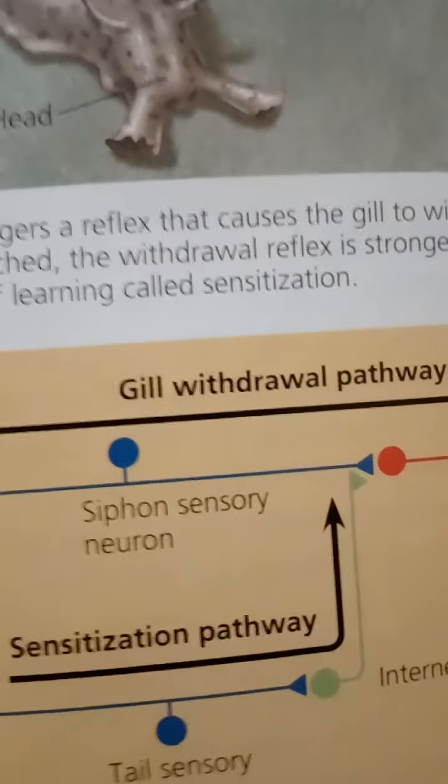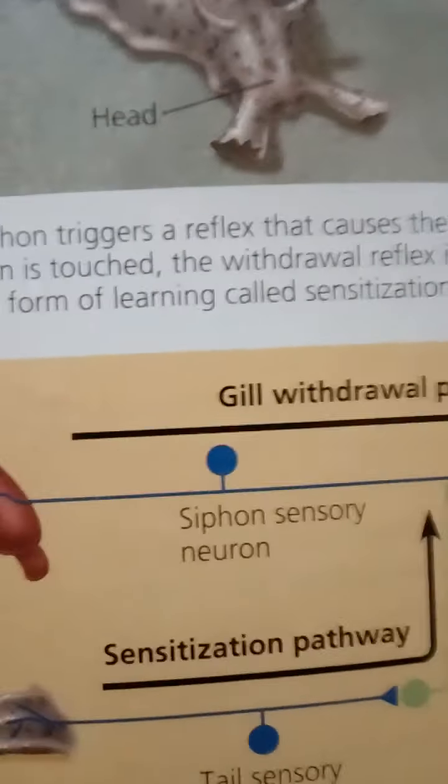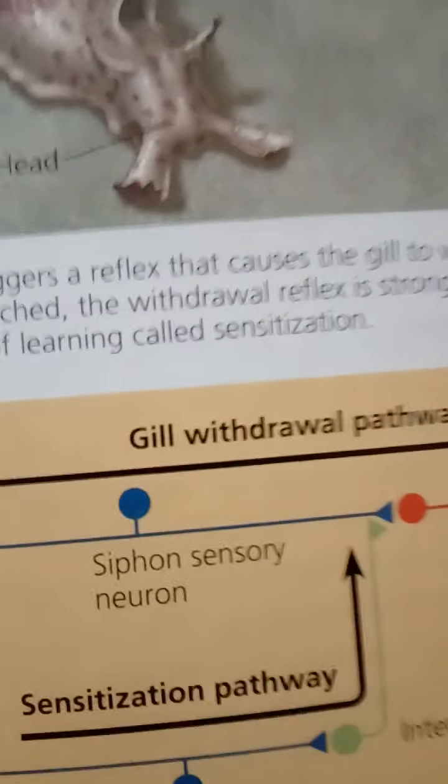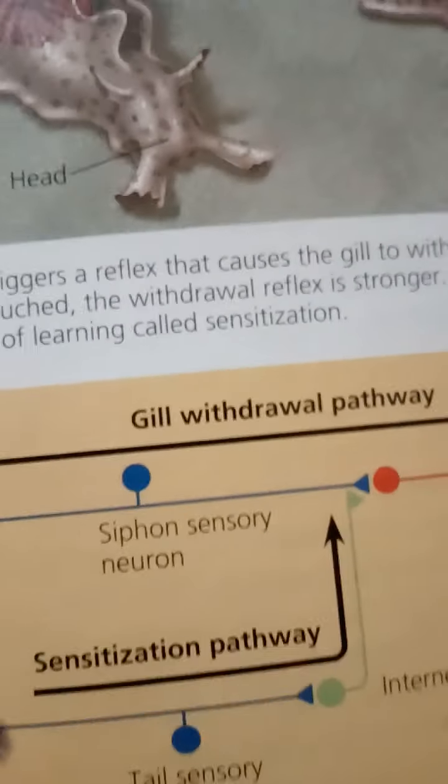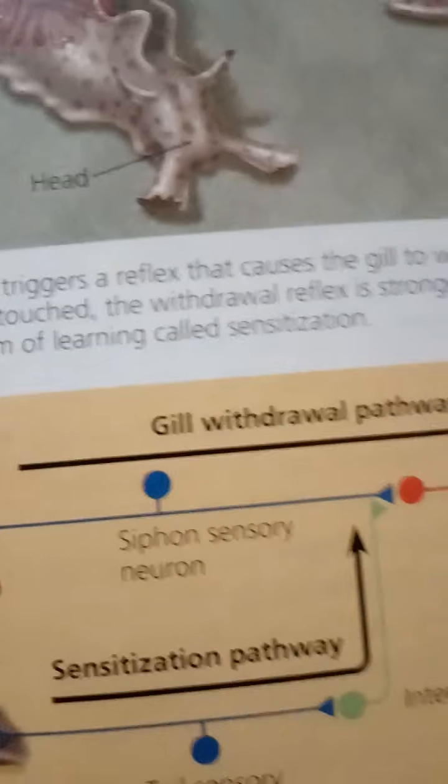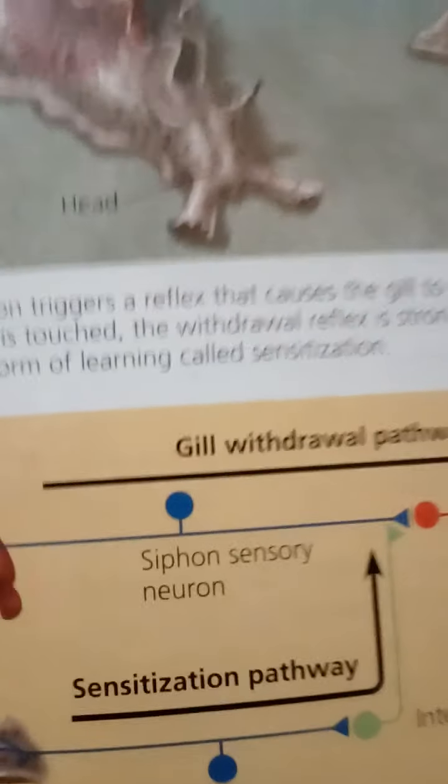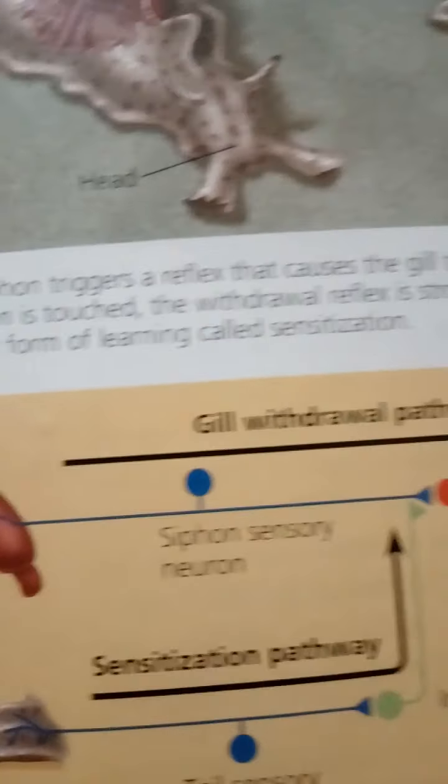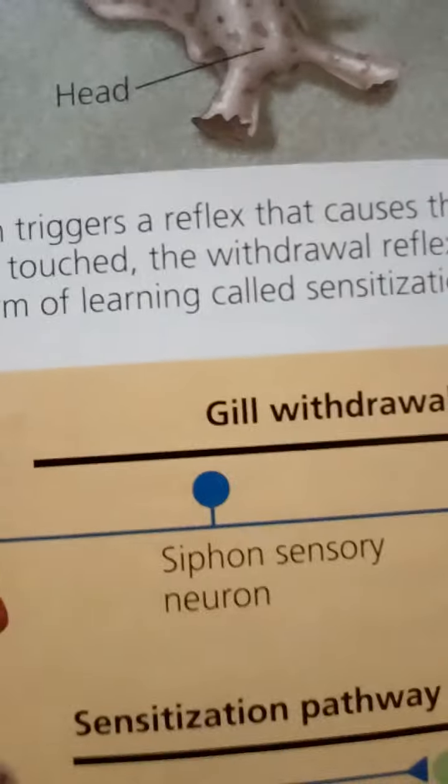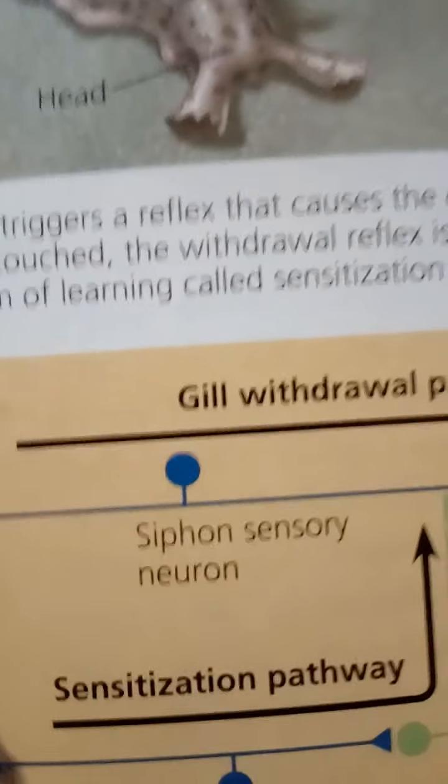These imaging techniques can also be used to compare conscious and unconscious processing of sensory information. Such studies do not pinpoint a consciousness center in the brain. Rather, they offer an increasingly detailed picture of how neural activity correlates with conscious experiences.